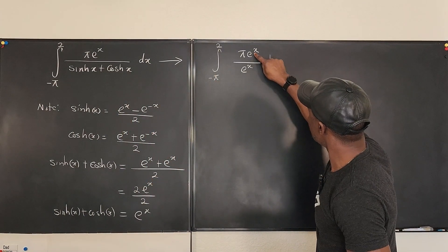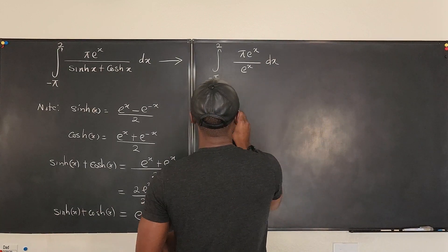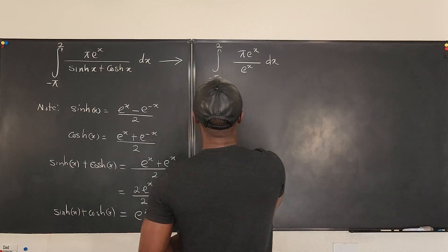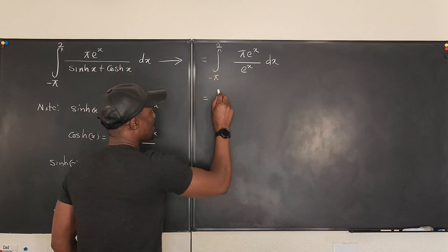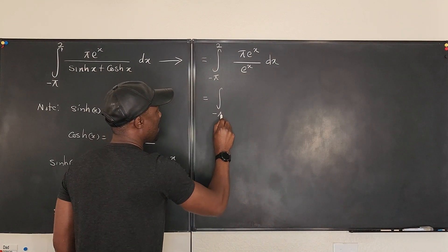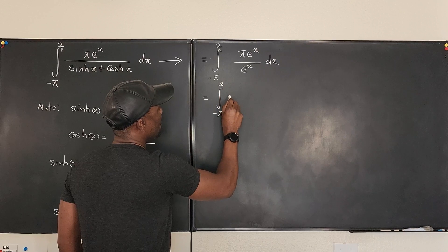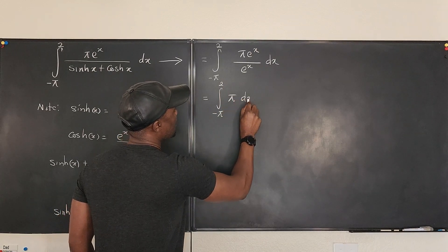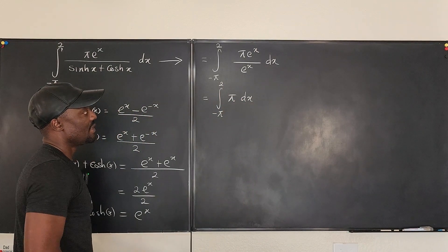And I can cancel this out so that what I have left is the integral from -π to 2 of just π dx. That's it.